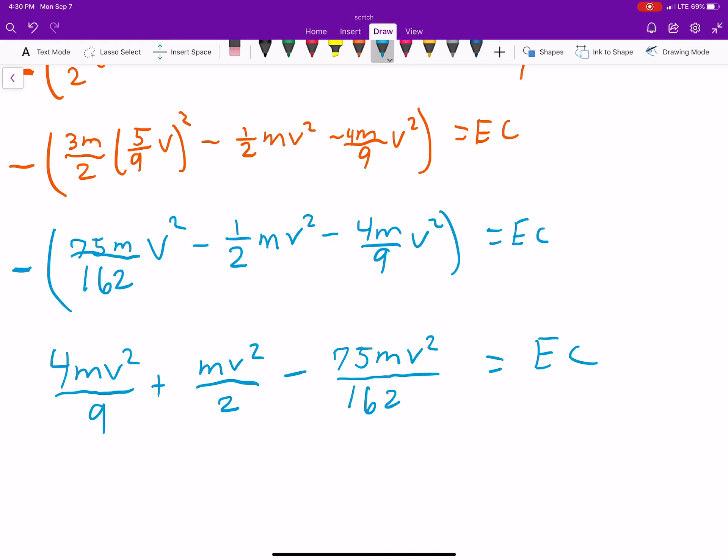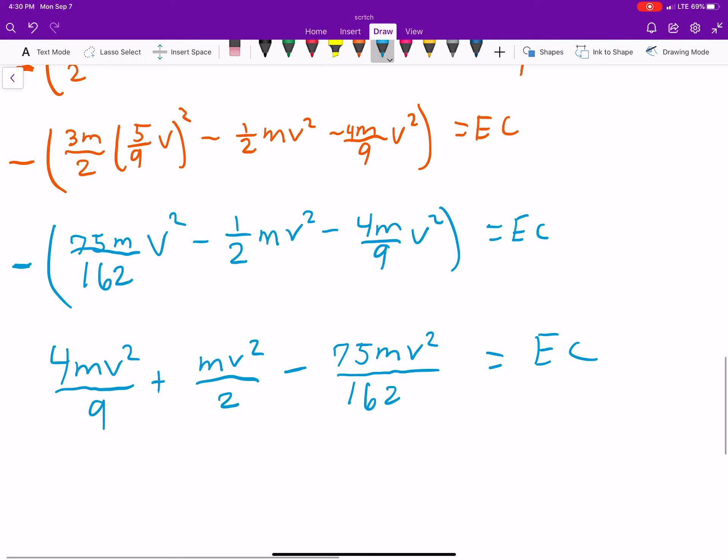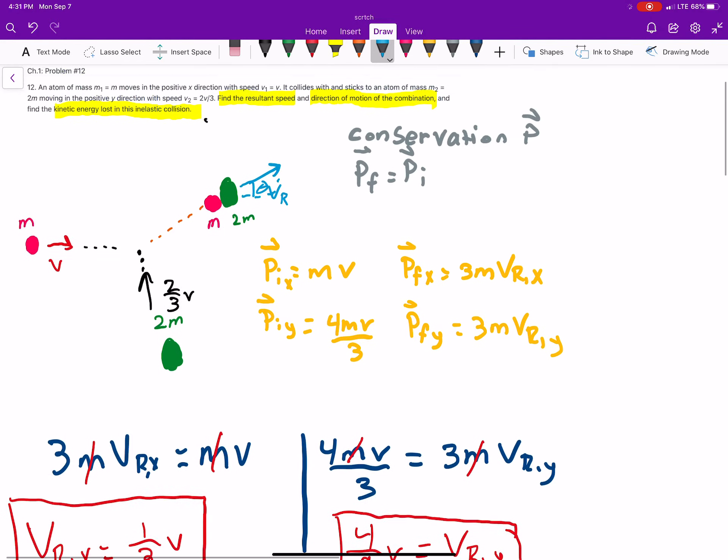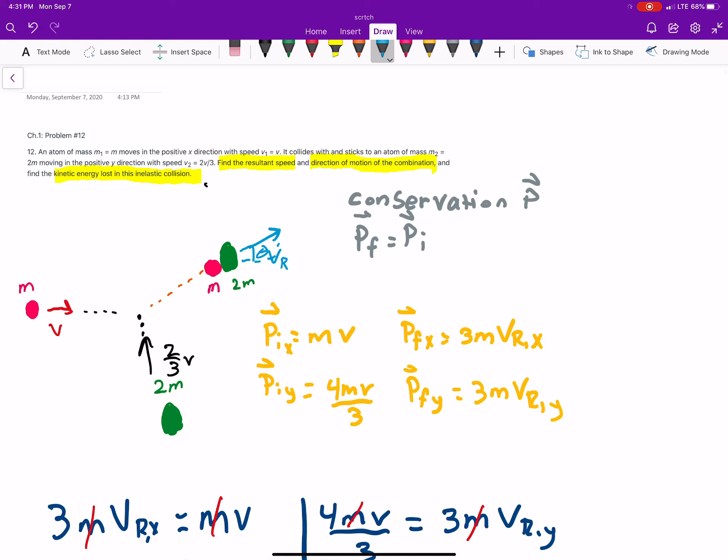So, that's 4/9, plus, 1/2, minus, 75 over 162. And I get 13mv squared over 27, is the energy that's been converted from kinetic energy to something else. So, a little bit of math there to get that, but that's the energy converted.